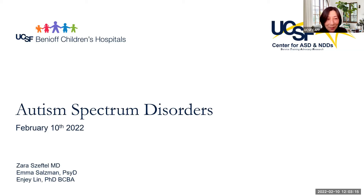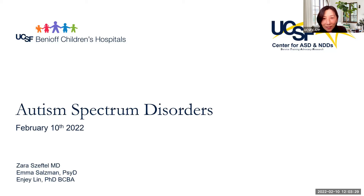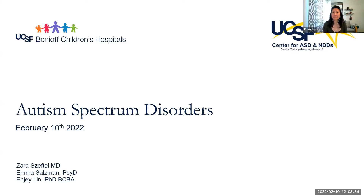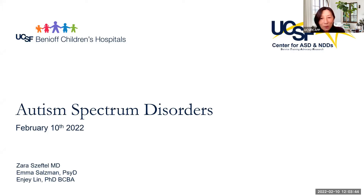We're very lucky today to have three great speakers talking about autism spectrum disorder. We know it's an increasingly commonly identified issue. Dr. Zalda Scheftel is a child and adolescent psychiatrist in the Division of Mental Health and Child Development at UCSF Benioff Children's Hospital Oakland and in the Division of Child and Adolescent Psychiatry in the UCSF Department of Psychiatry and Behavioral Sciences. She provides clinical care in outpatient clinics at Benioff Children's Hospital Oakland and Zuckerberg San Francisco General Hospital Trauma Center.